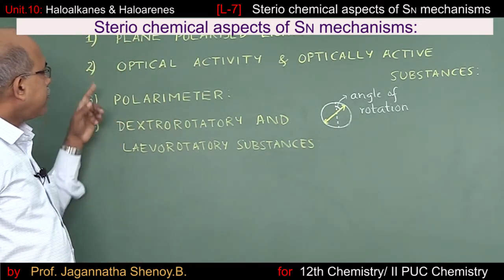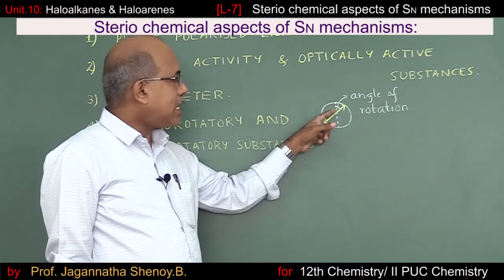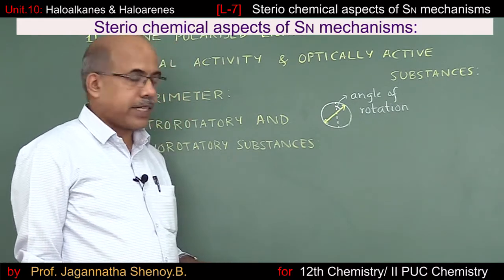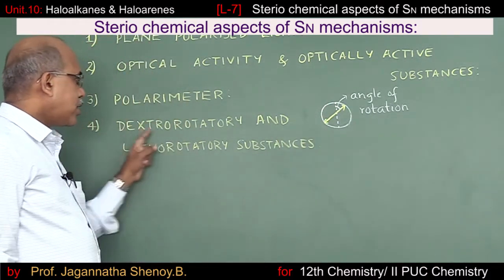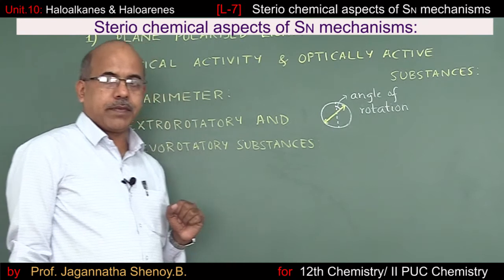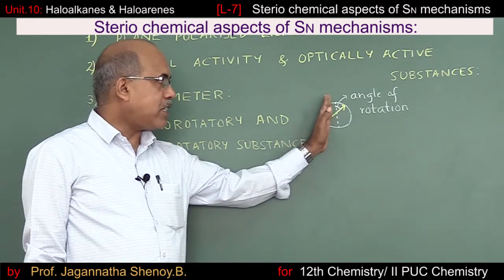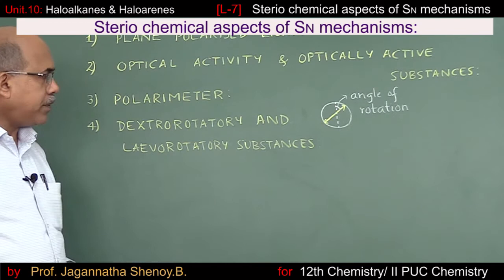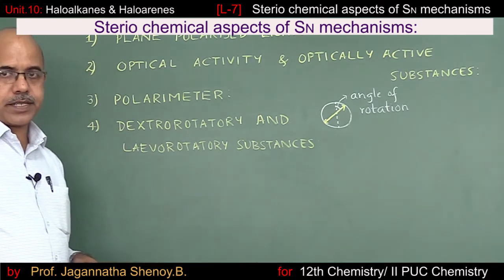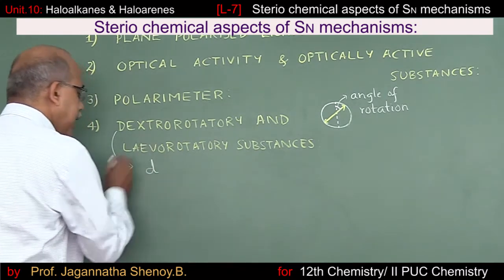Substances that rotate the plane of polarized light in the clockwise direction, or towards the right, when in solution are called dextrorotatory substances — glucose is an example. On the other hand, substances like fructose that rotate plane polarized light in the anti-clockwise direction or towards the left are called levorotatory substances.